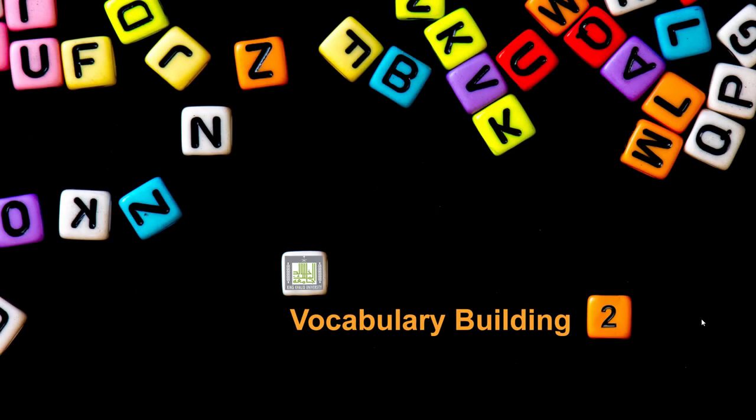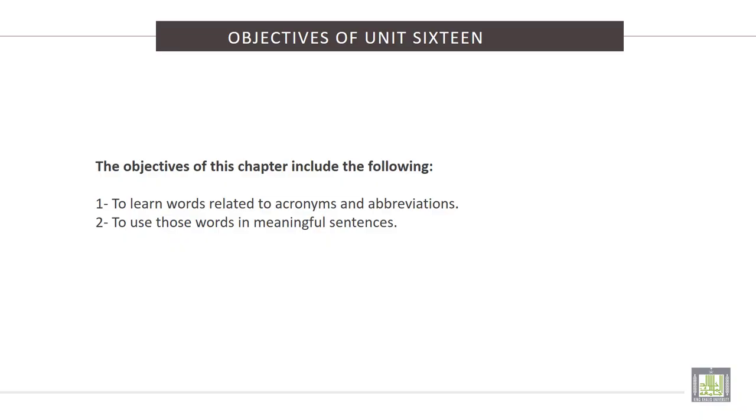Vocabulary Building 2, Unit 16: Abbreviations and Acronyms. The objectives of this chapter include the following: 1. To learn words related to acronyms and abbreviations. 2. To use those words in meaningful sentences. Now, listen to the video of this unit.